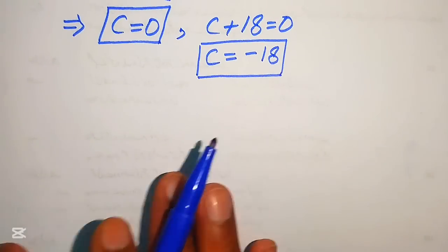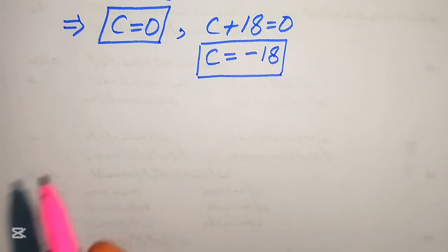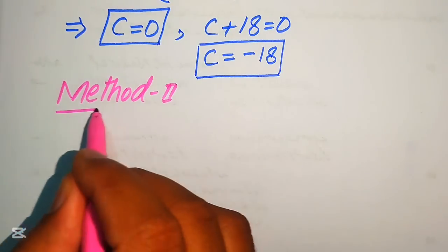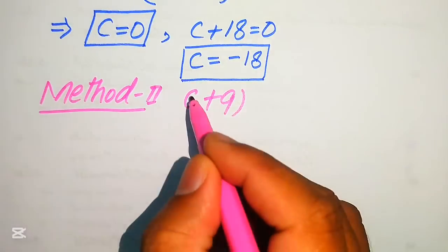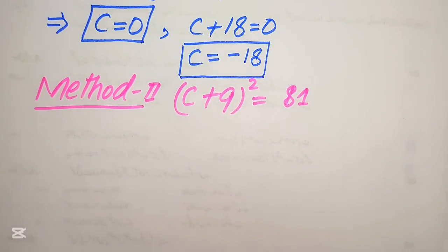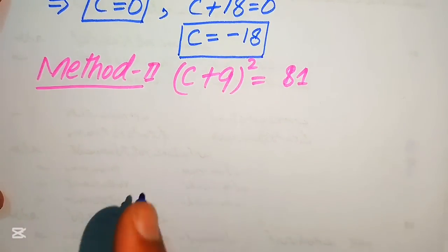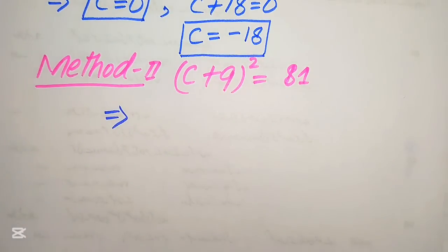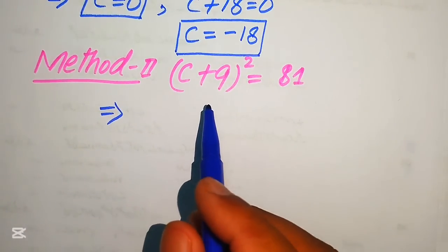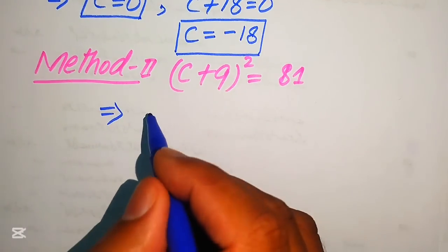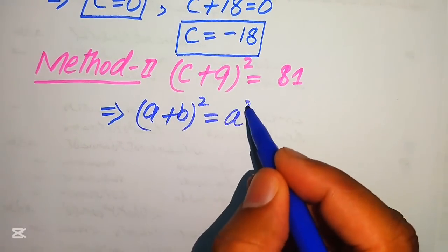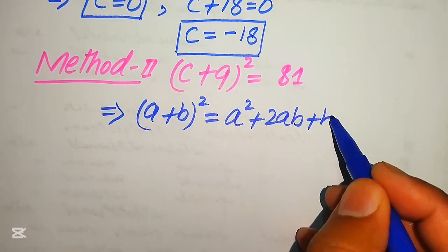Now we proceed with method number 2. We copy down the given equation: (c + 9)² equals 81. In this method we expand the left hand side using the formula (a + b)² equals a² + 2ab + b².